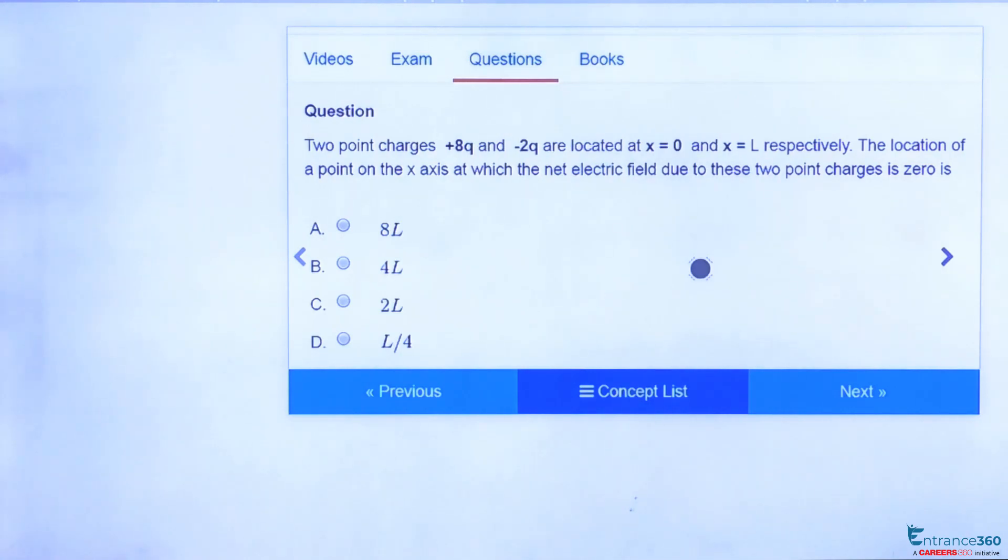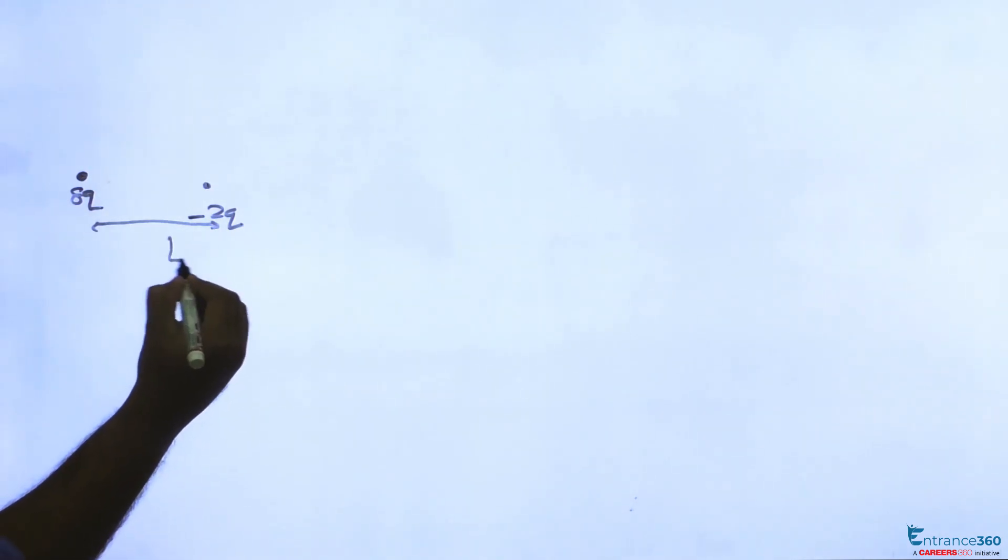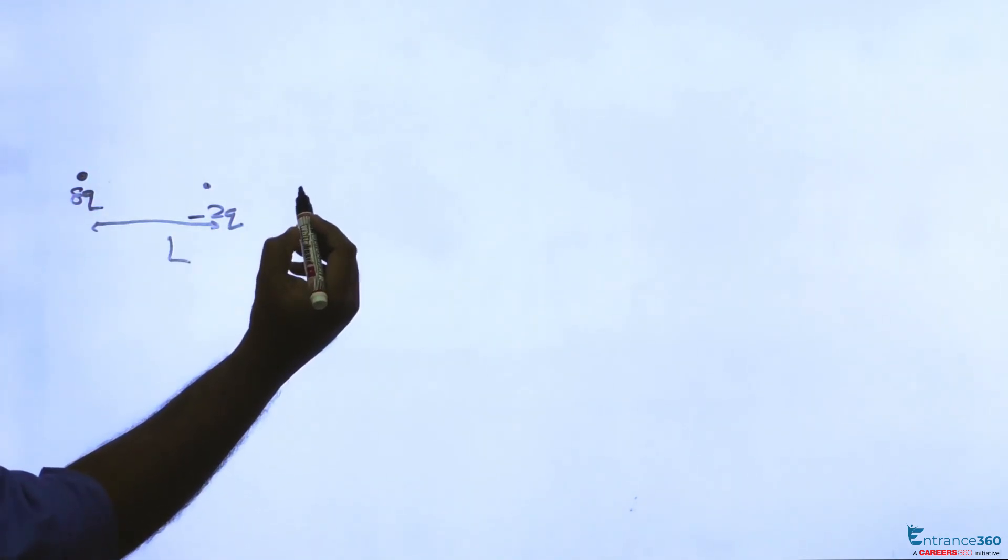Given two charges 8q and minus 2q separated by a distance L, let's assume the electric field due to these charges is zero at a distance from here.